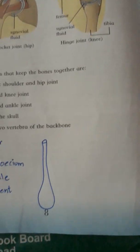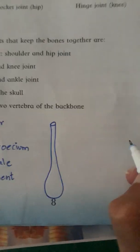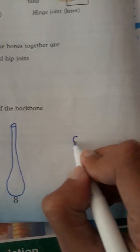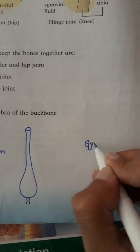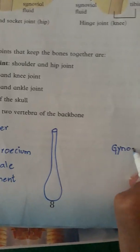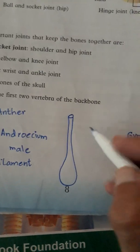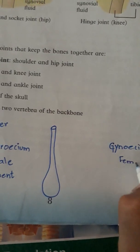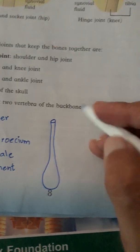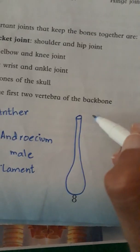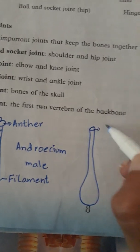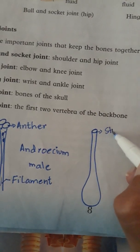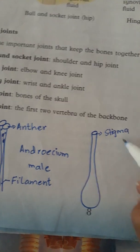The other part of the flower is called gynoecium. This is the female part of the flower. The top part is called the stigma — this is where pollen grains land.